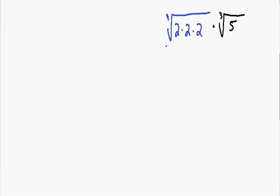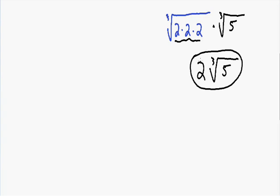Now we're getting really close to our solution. On the left-hand side, we have the cube root of 2 multiplied by itself 3 times, which is just 2. This is being multiplied by the cube root of 5, which cannot be simplified any further. So this is our solution. The cube root of 40 is equal to 2 times the cube root of 5.